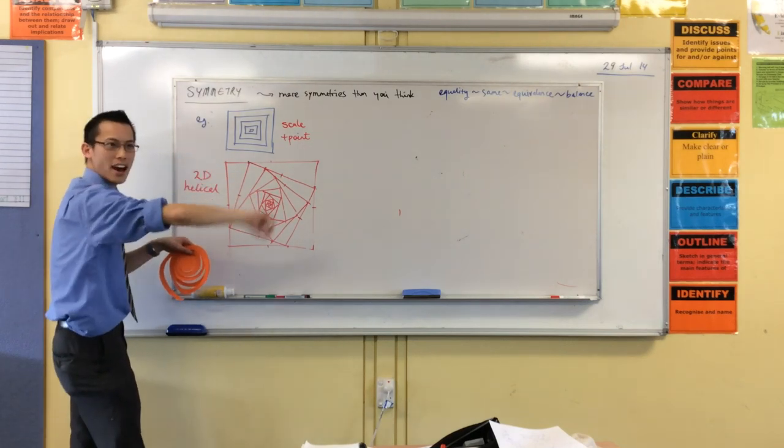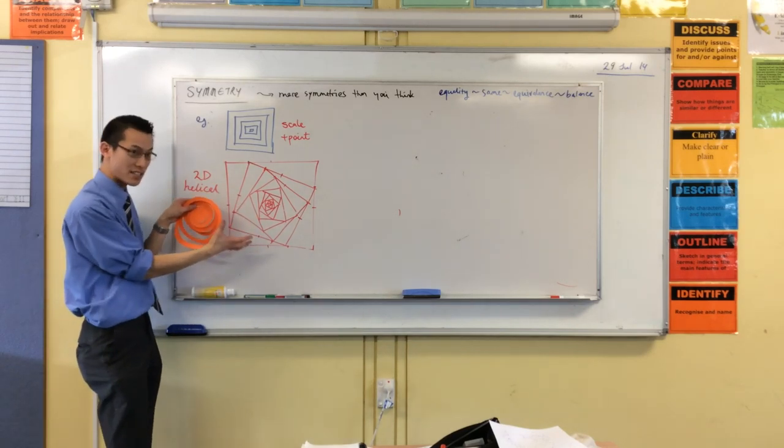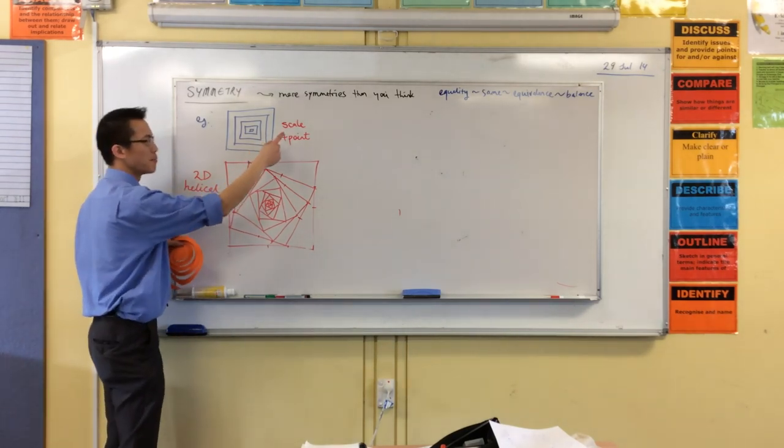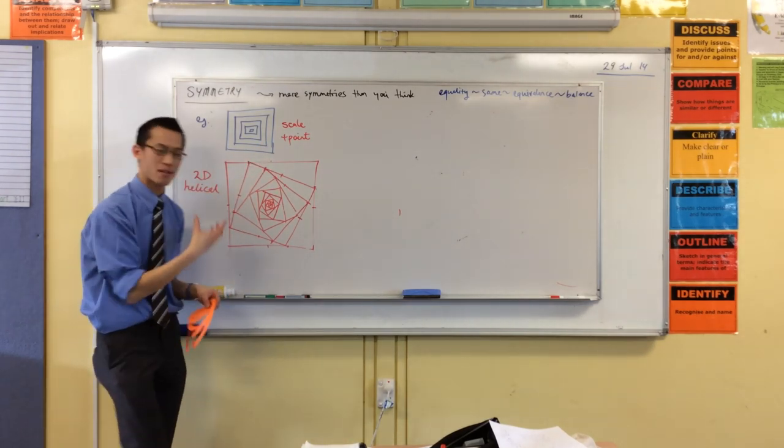Like, you can see it spiraling out, right? And in fact, the golden spiral demonstrates exactly the same kind of symmetry, right? It's neither point symmetry nor scale symmetry on its own. It's kind of some weird mix of both, okay?